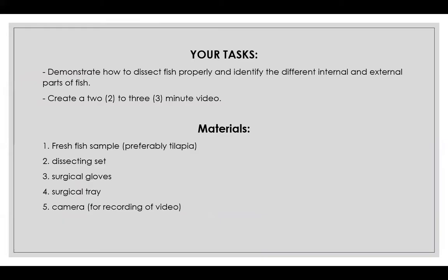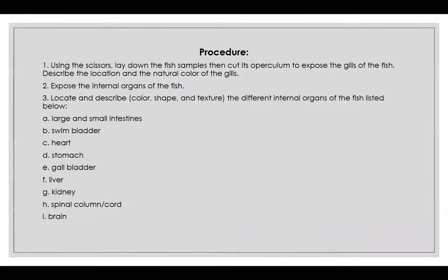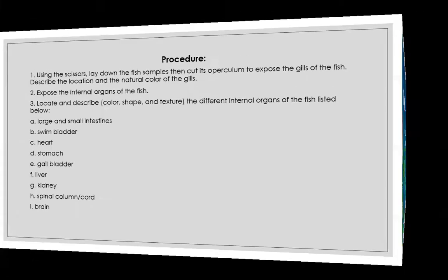Materials needed: fresh fish sample, preferably tilapia, dissecting set, surgical gloves, surgical tray, and a camera for recording. For the procedure, using scissors, lay down the fish sample then cut its upper column to expose the gills of the fish. Describe the location and the natural color of the gills. Then expose the internal organs of the fish and locate and describe the color, shape, and texture of the different internal organs — large and small intestines, swim bladder, heart, stomach, gallbladder, liver, kidney, spinal column or cord, and the brain.